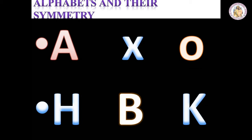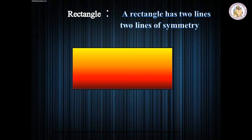O, B and K have horizontal symmetrical line. Children, you should draw the symmetrical lines for the rest of the letters in alphabets.